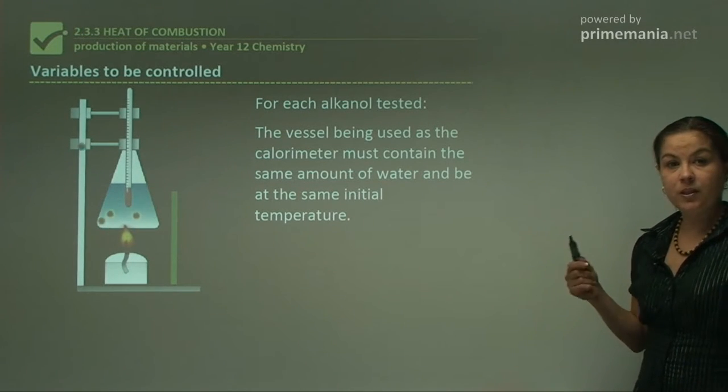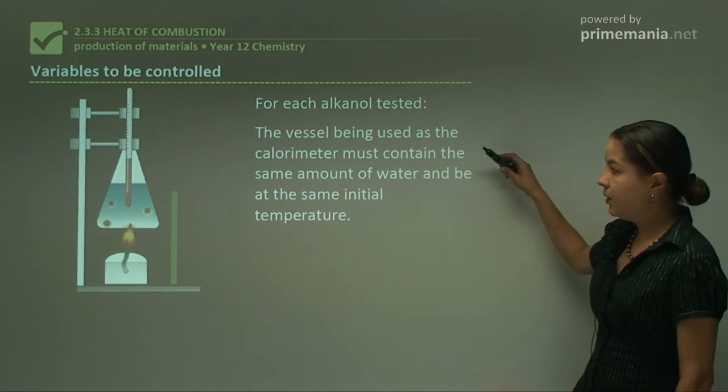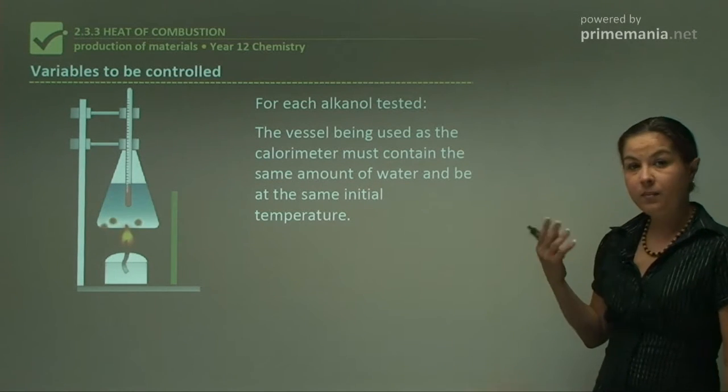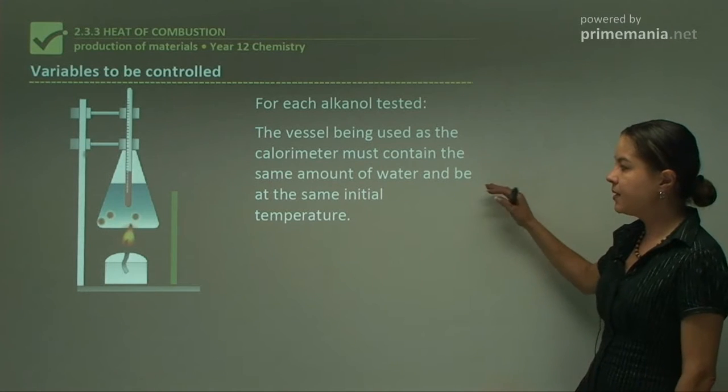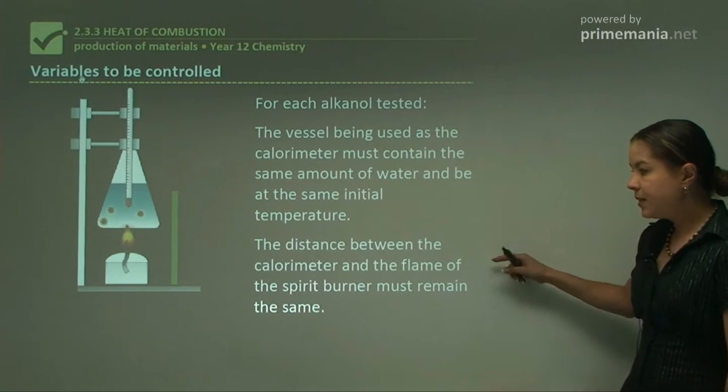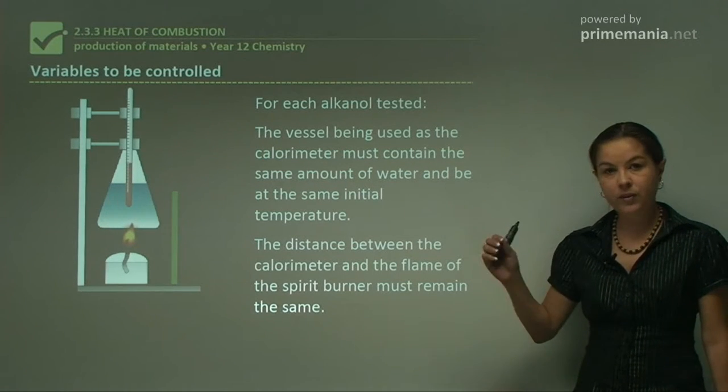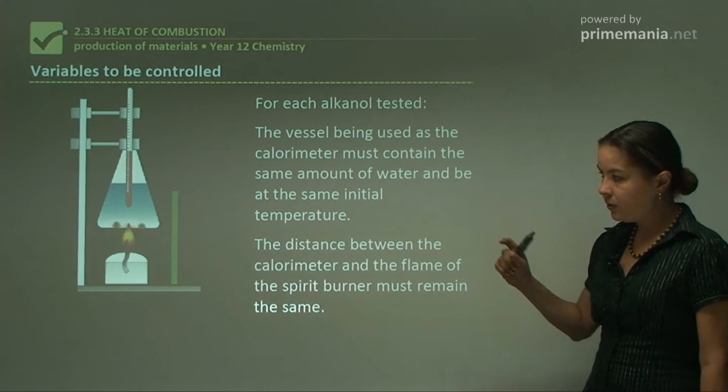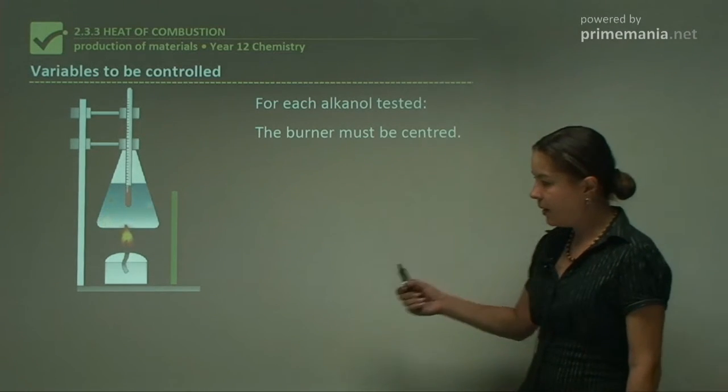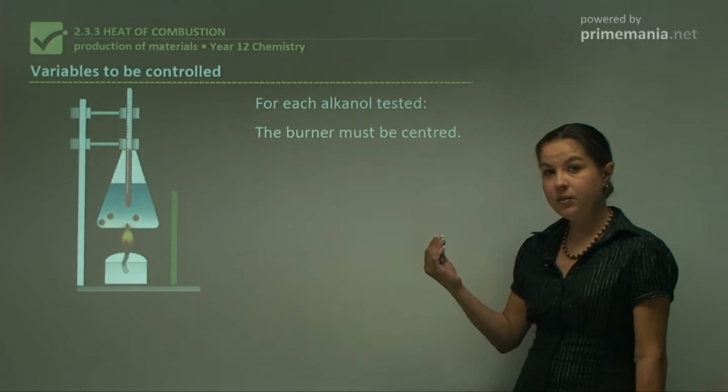Now let's look at the variables which we need to control in this experiment. For each alkanol tested, the vessel being used as the calorimeter, which is either a conical flask or a beaker, must contain the same amount of water and be at the same initial temperature. The distance between the calorimeter and the flame of the spirit burner must remain the same. So every time you change it over for different alkanols, make sure you measure that. And the burner must be centered. We don't want the burner over here or over there, we want it right in the middle of our calorimeter every single time.